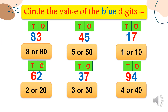Let's answer the next example: circle the value of the blue digits. First number: eighty-three, the blue digit is eight. Eight is in the tens place, and in tens we put a zero, so its value is eighty. Next, forty-five, the blue digit is five. Five is in the ones place — in ones, no zero — so its value equals five. We have number seventeen, the blue digit is one. One is in tens, put a zero, its value equals ten.